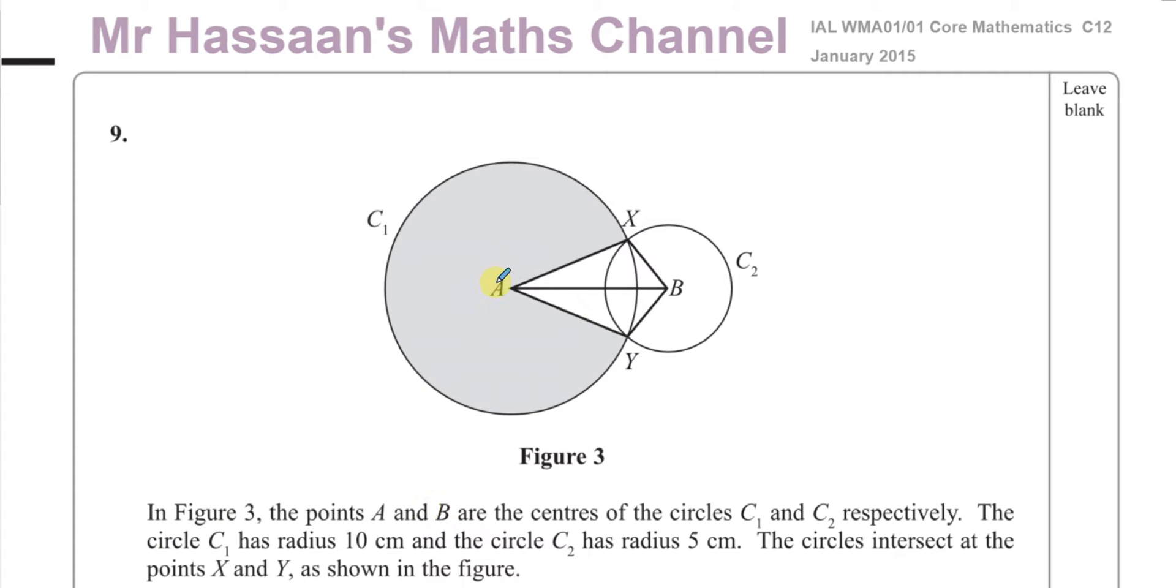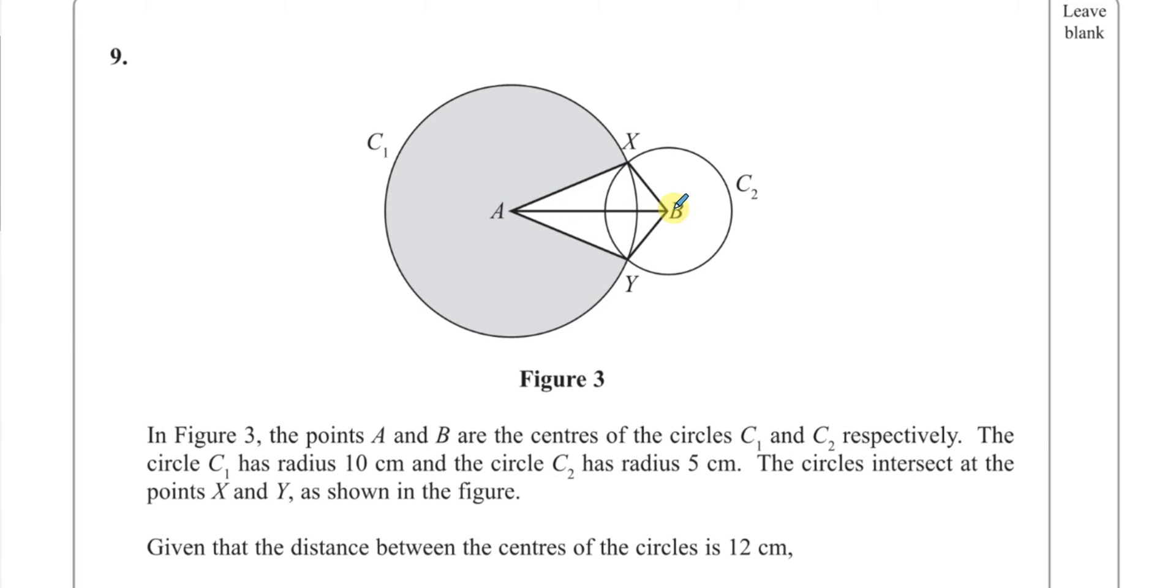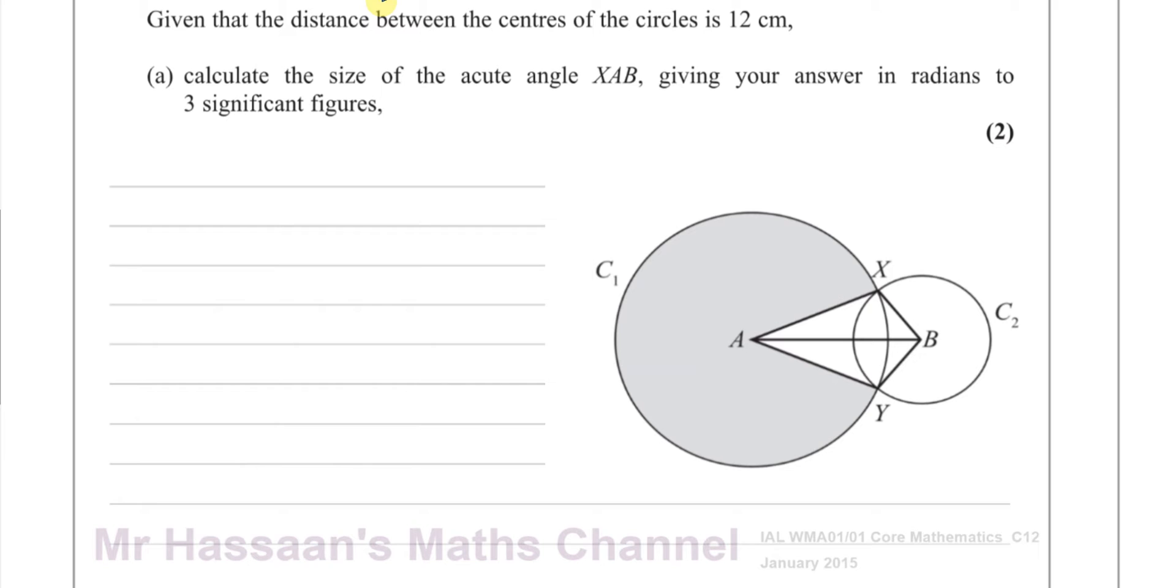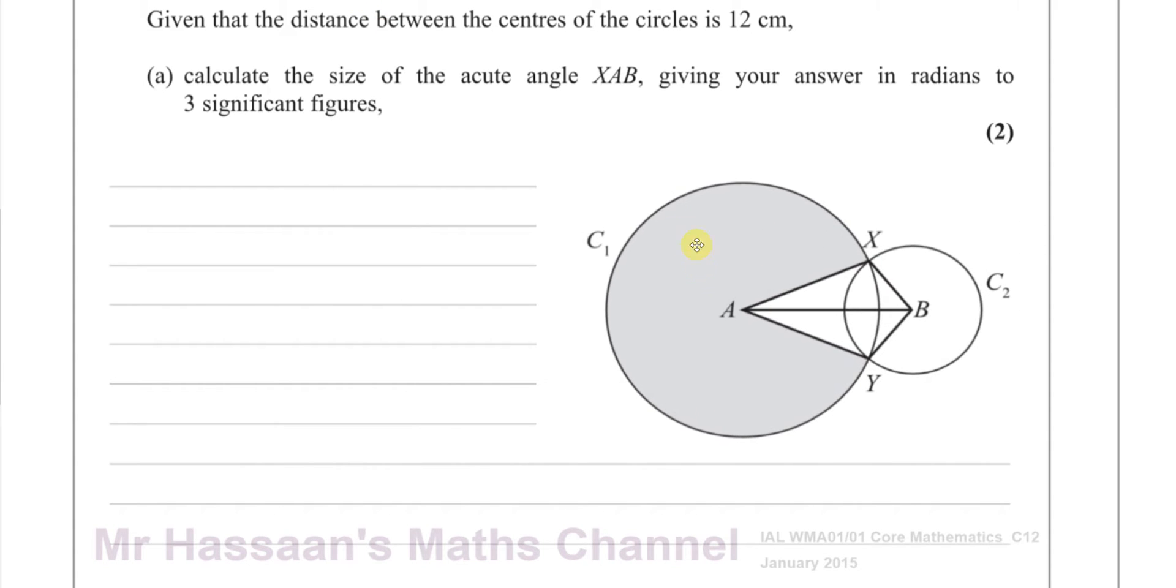It says in figure 3 the points A and B are the centers of circles C1 and C2 respectively. Circle C1 has a radius of 10 centimeters and C2 has a radius of 5 centimeters. The circles intersect at X and Y as shown in the figure. Given that the distance between the centers of the two circles is 12 centimeters, we have to calculate the size of the acute angle XAB.